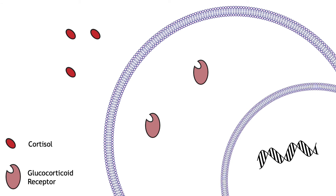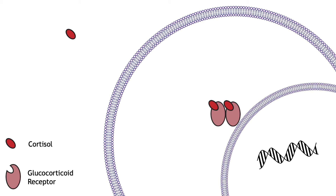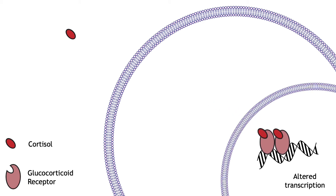Cortisol is a steroid hormone. Steroid hormones are synthesized from cholesterol and are able to cross the phospholipid bilayer because they are lipid soluble. Glucocorticoid receptors are located in the cytoplasm of many cell types across the body. The receptors dimerize after cortisol binds, and the dimer moves to the nucleus where it can alter DNA transcription.